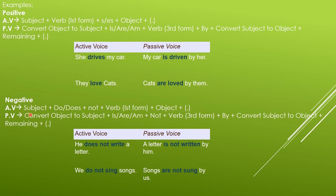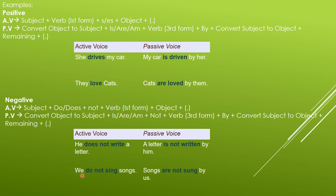In a negative sentence, active voice uses: subject + do/does + not + verb (first form) + object + full stop. In passive voice: object becomes subject + is/am + not + verb (third form) + by + subject becomes object + full stop. Example: 'He does not write a letter.' Passive voice: 'A letter is not written by him.' The phrase 'does not' changes to 'is not' in passive voice. Second example: 'We do not sing songs.' Passive: 'Songs are not sung by us.'